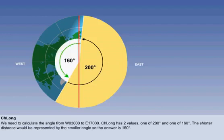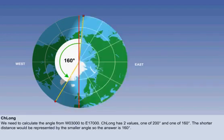However, it is usual to only consider the smaller angle, as this would represent the shorter distance between the two meridians. The correct Chellong is therefore 160 degrees.